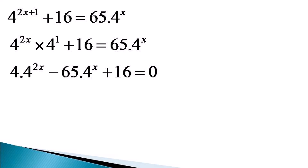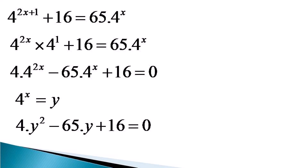This equation cannot be solved simply by taking log of both sides or doing some other operations. But when we observe the terms 4 raised to the power 2x and 4 raised to the power x, we note that 4 raised to the power 2x is the square of 4 raised to the power x. So here we make a substitution: 4 raised to the power x is equal to y. With this substitution, the equation becomes 4y squared minus 65y plus 16 is equal to 0, which is a simple quadratic equation. Such exponential equations, which can be transformed to a quadratic equation by substitution, are called disguised quadratic equations.